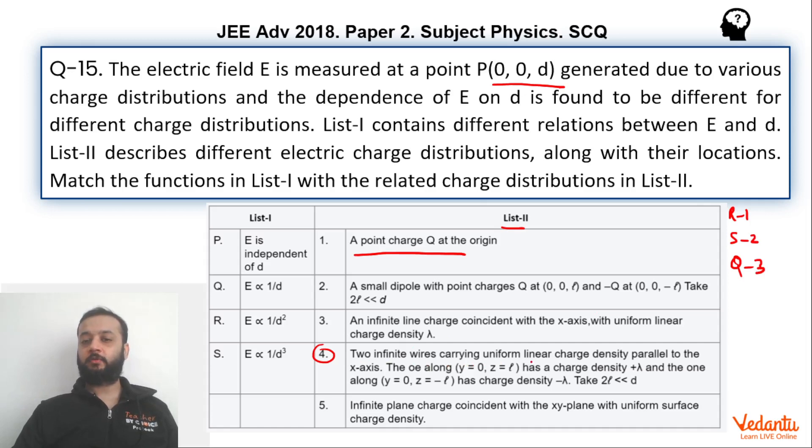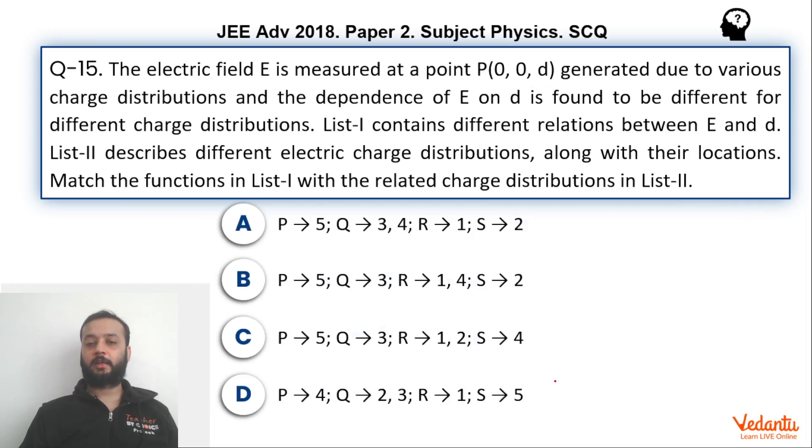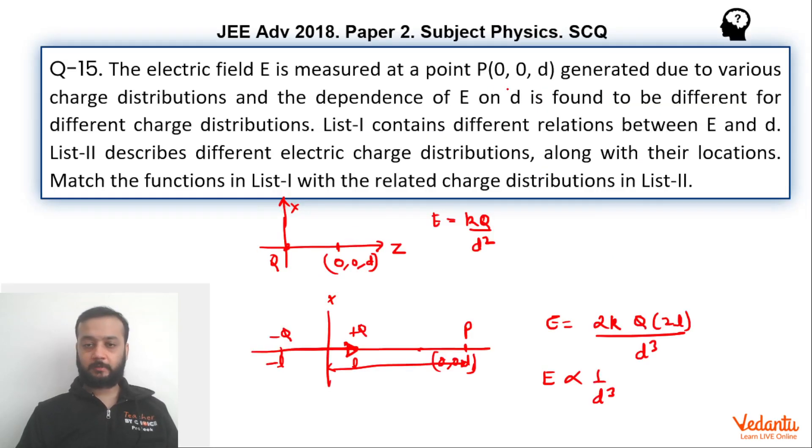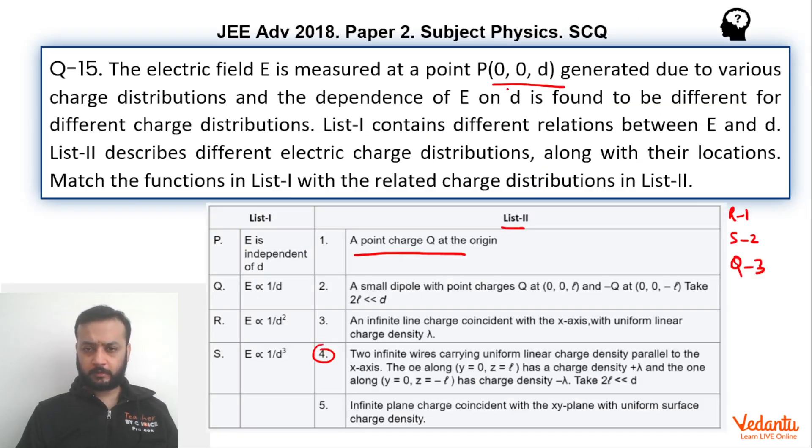Two infinite wires carrying uniform linear charge density parallel to x-axis. The one along y equals 0, z equals L has a charge density plus lambda, and the one along y equals 0 and z equals minus L has a charge density minus lambda. So what is the scenario? If we say that this is the z-axis, this is the x-axis, we can say that both the wires are parallel to x-axis. And since y is 0, they must be in x-z plane. One is lying along 0, 0, L like this, and this is infinite wire. So this distance is L and this distance is again L, and this is negatively charged.